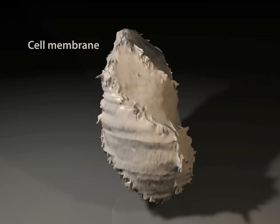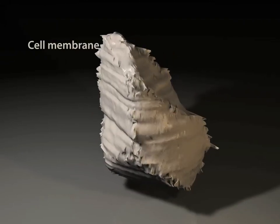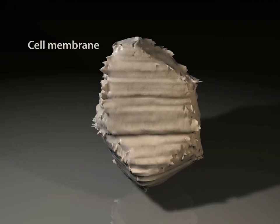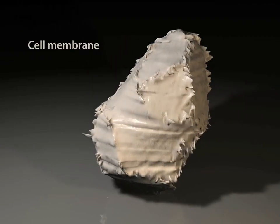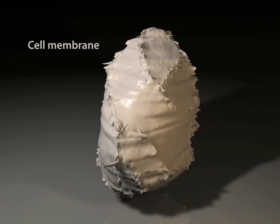This rotating 3D model shows a single cell, similar to the trillions of cells that make up your body. This particular cell came from the pancreas of a mouse, and it's used as a biological model to study diabetes in humans.